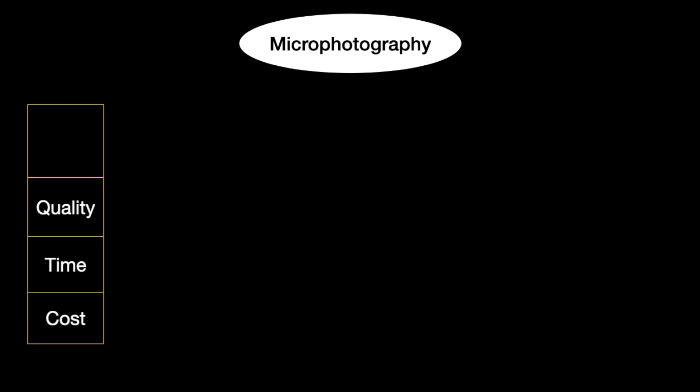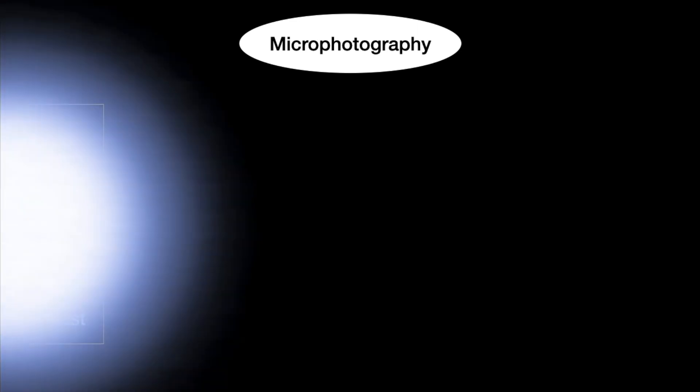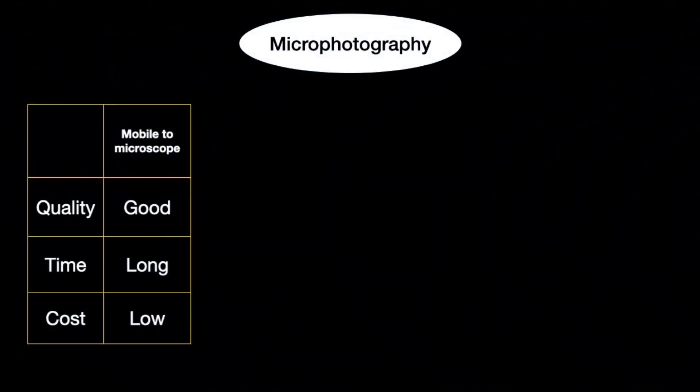To summarize the methods of microphotography by quality, time, and cost: the simplest method is mobile phone to microscope, where you use your phone to take a picture through the eyepiece. It is a technical art — not everyone can do it easily and it takes a long time, but the quality is good and the cost is very low since you only need a mobile phone and the microscope.